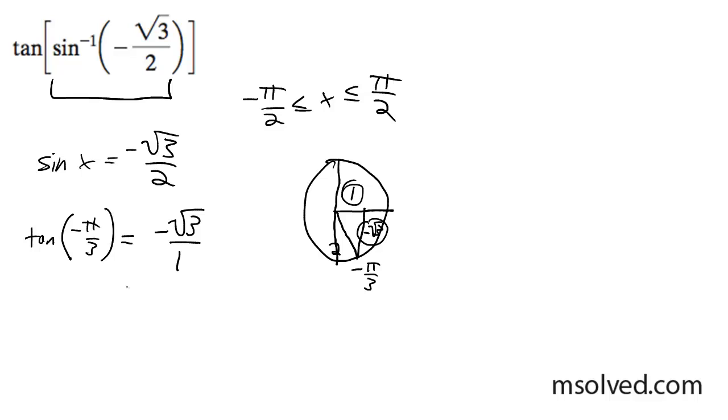So negative root 3 over 1, which is just simply negative root 3. That's our solution.